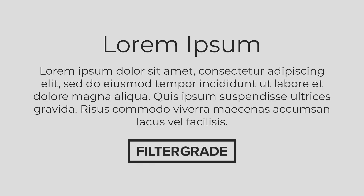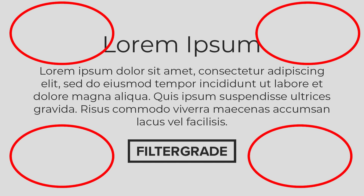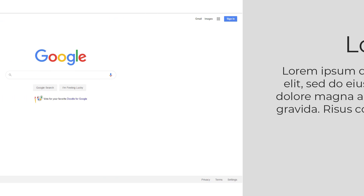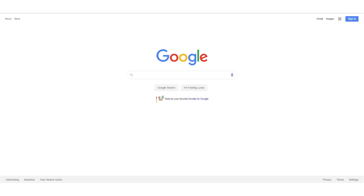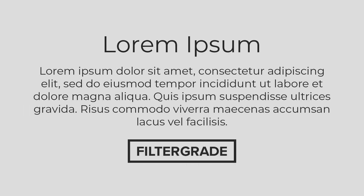Whitespace. Don't cram your design full of content. Leave whitespace or negative space so your core components stand out. Just look at the Google homepage — this is the definition of using whitespace effectively. Google knows you don't care about anything except the search bar, so they put it front and center with absolutely no distractions. Not all of your designs have to be this minimalistic, but it shows the importance of negative space. You need to let your designs breathe so that people can actually notice what you want them to notice.